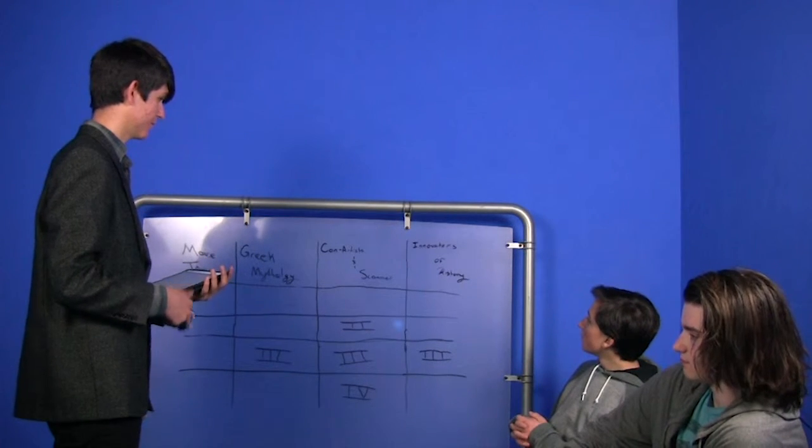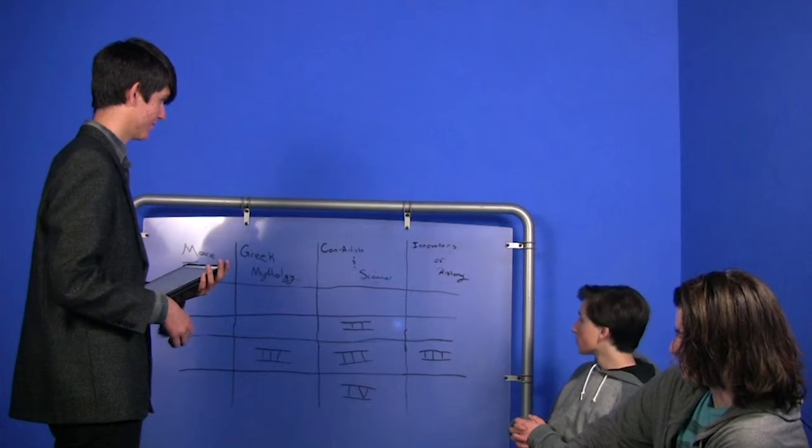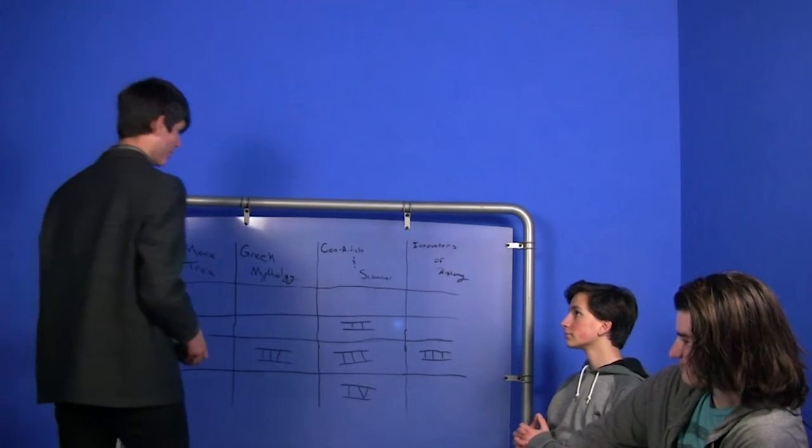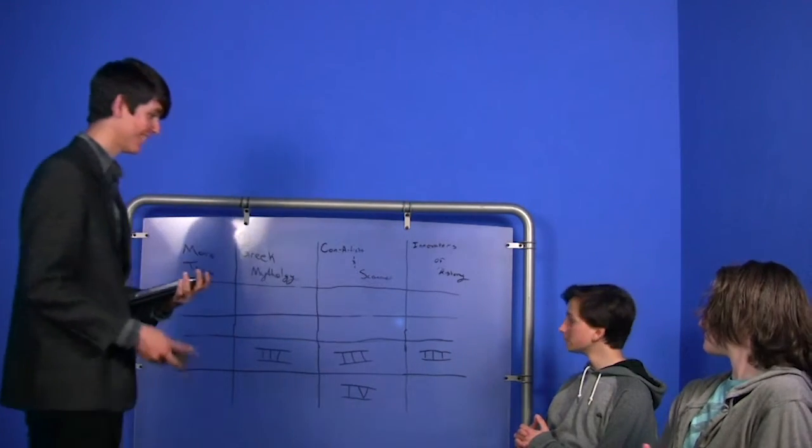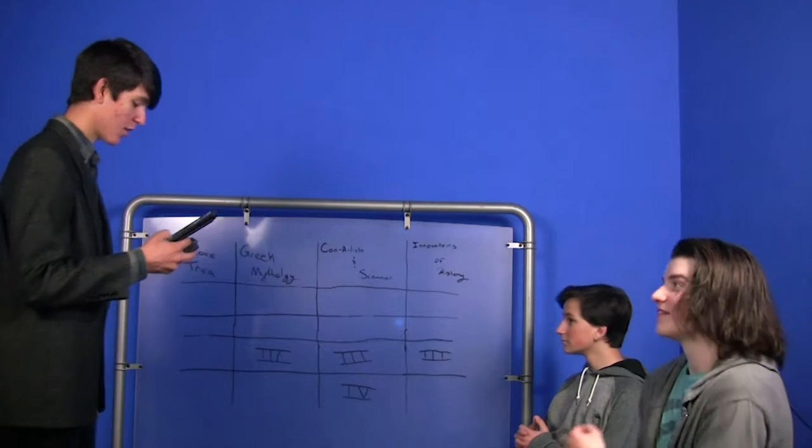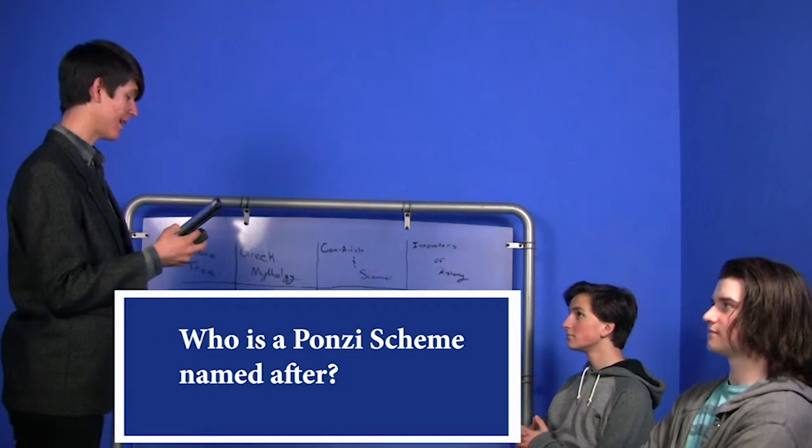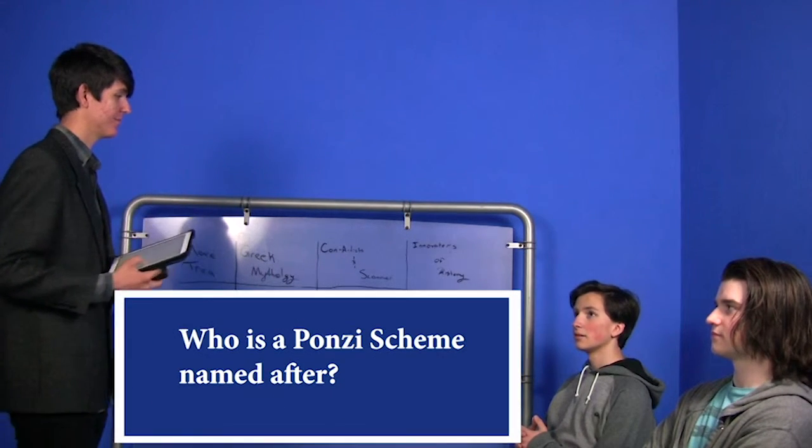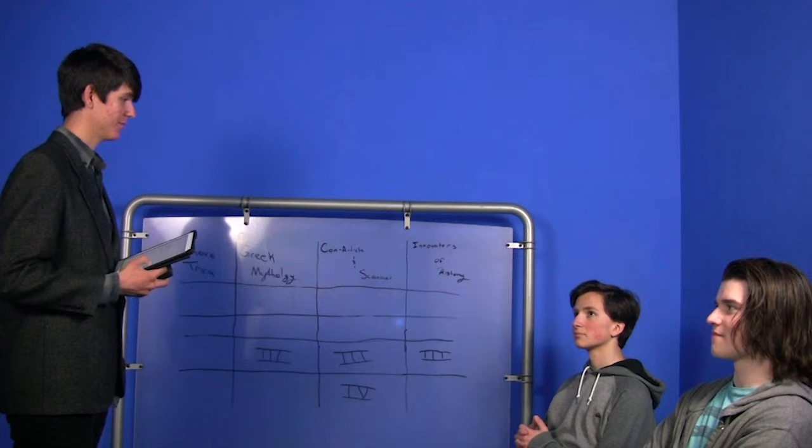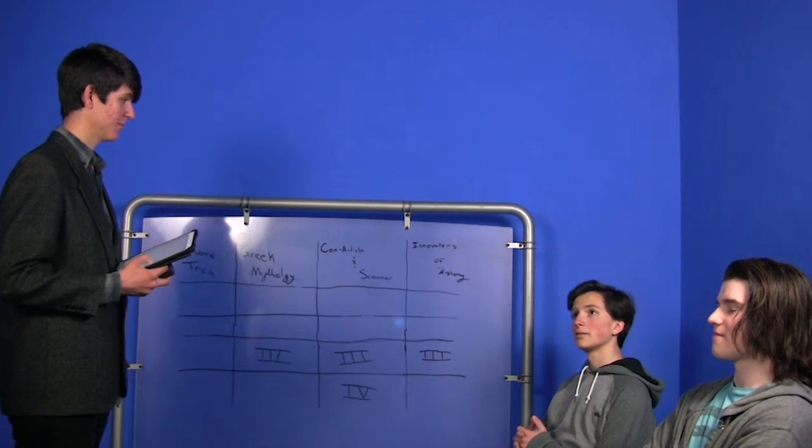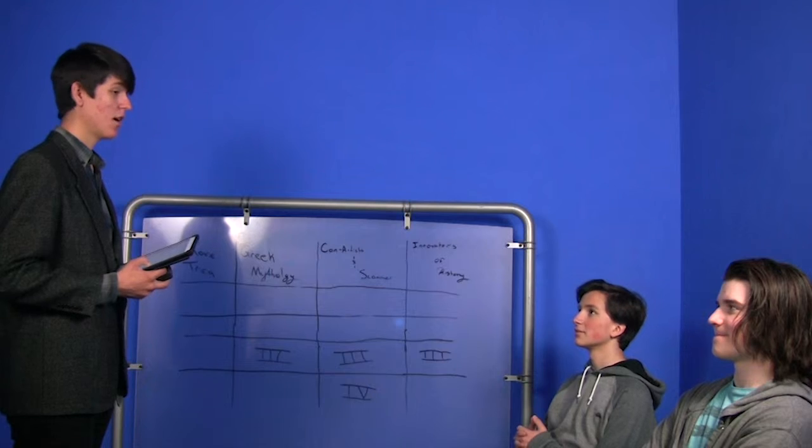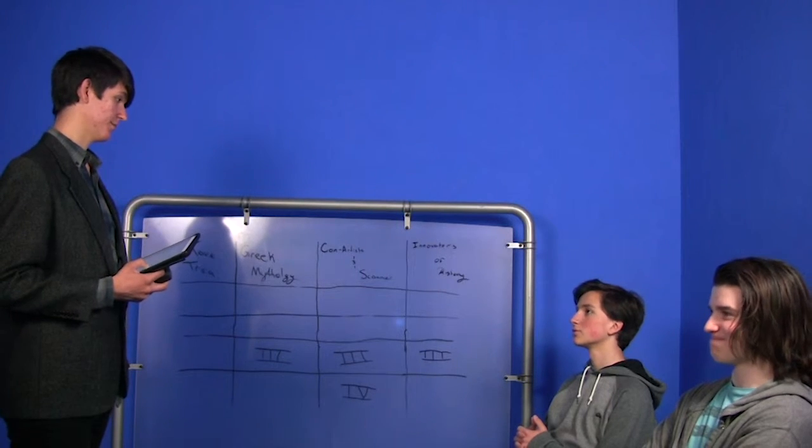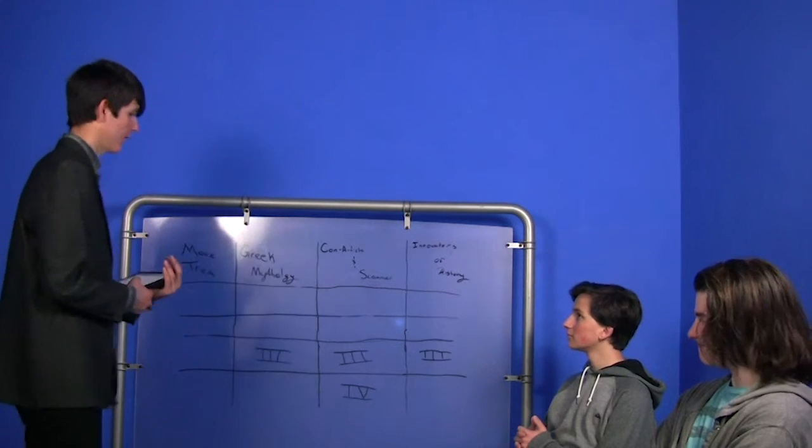Jordan. Let me get a Con Artists and Scammers for 2. Con Artists and Scammers for 2. Who is a Ponzi scheme named after? Charles. Yes. Jackson.